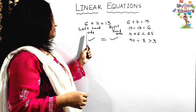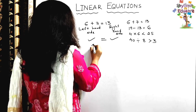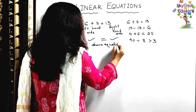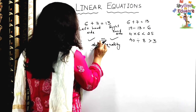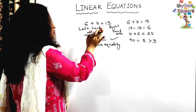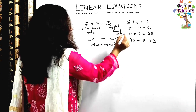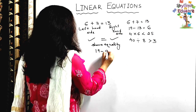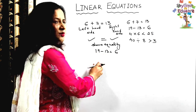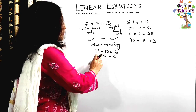An equation has a left-hand side and a right-hand side, and it shows equality because there is an equal to sign. The second statement: 19 minus 13 is equal to 6. So 6 equals 6 — both sides are equal, so this is an equation.